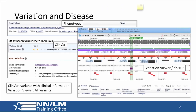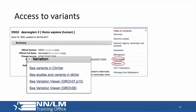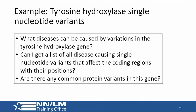The example is about single nucleotide variants in tyrosine hydroxylase, broken into three parts: What diseases can be caused by variations in the tyrosine hydroxylase gene? Can we get a list of all disease-causing single nucleotide variants affecting the coding regions with their positions? And are there any common protein variants for this gene? We'll discuss what 'common variants' means as we proceed.